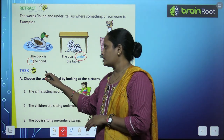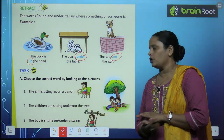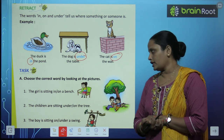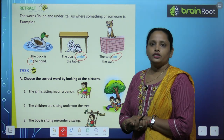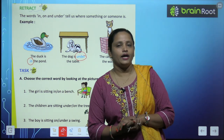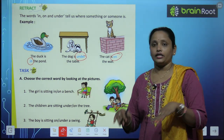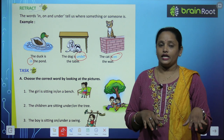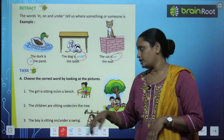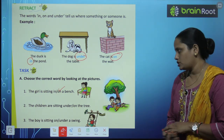Choose the correct word by looking at the picture. The girl is sitting in a bench, or on a bench? Toa bench ke andar baithi hai, ya on matlab upar baithi hai. On a bench.